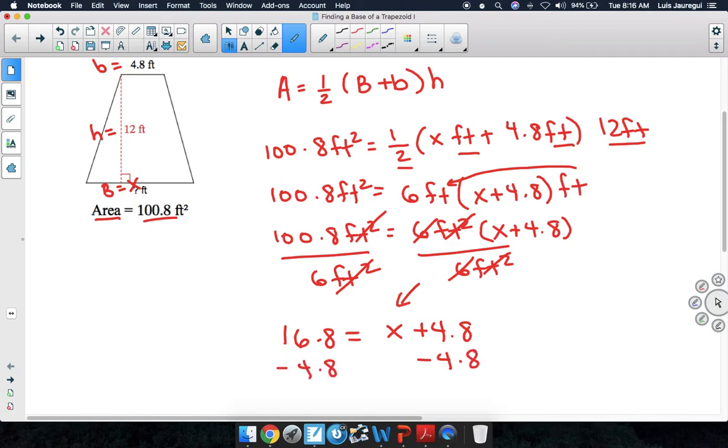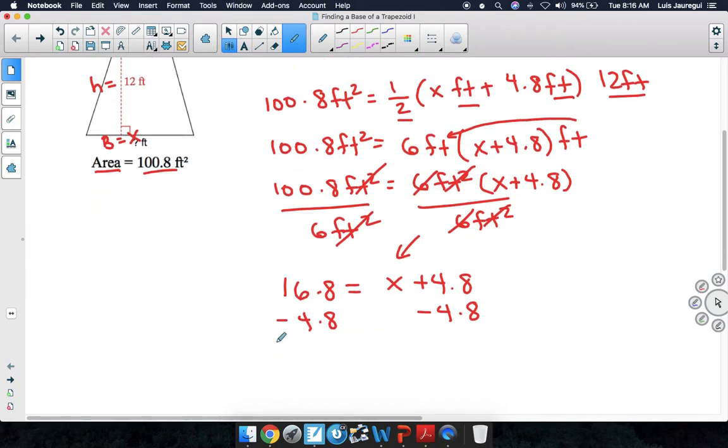Now 16.8 minus 4.8 equals 12. And that should be equal to x, since 4.8 minus 4.8 is 0. So we can say the big base has a length of 12 feet.